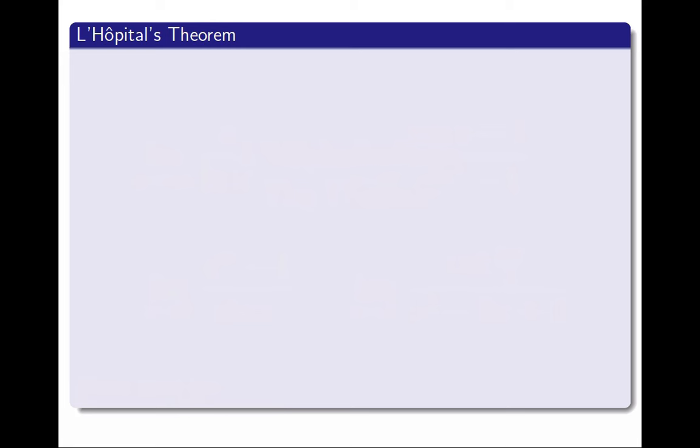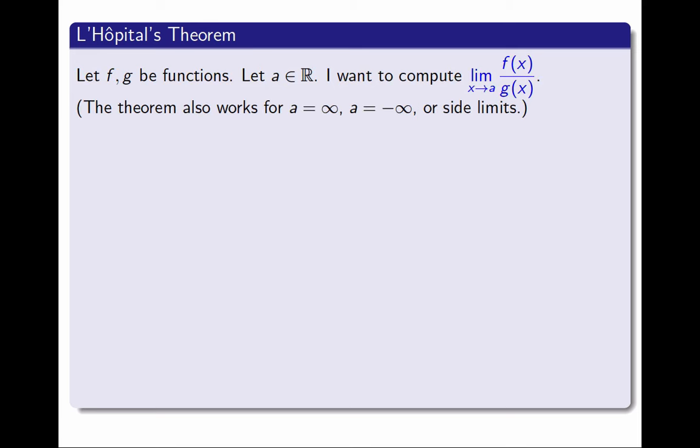So what does this theorem say? I'm going to begin with two functions, f and g, a real number a, and I want to compute the limit as x approaches a of f(x) divided by g(x). Well, the theorem actually is more general than that. The theorem also works for limits at infinity, and limits at minus infinity, and also for side limits. For simplicity, I'm going to write the statement only for limits as x approaches a number a, but the theorem is still true for all those other types of limits as well.